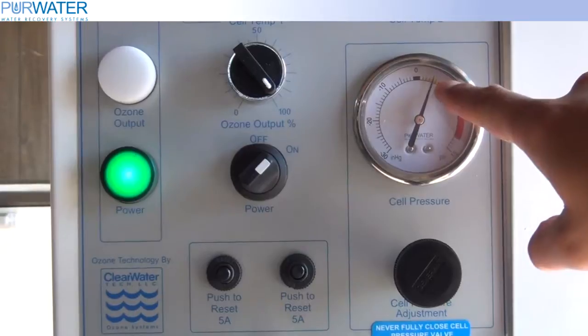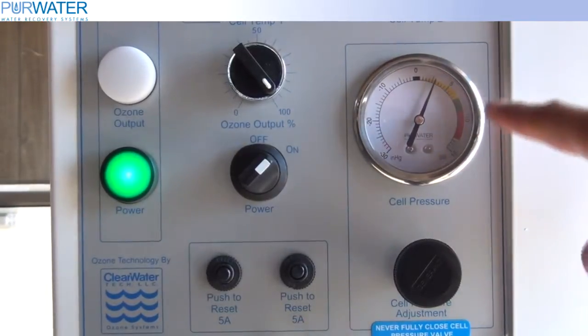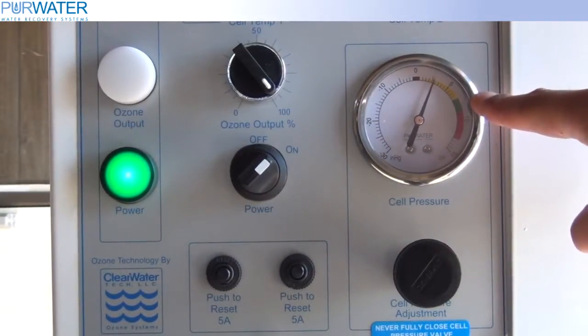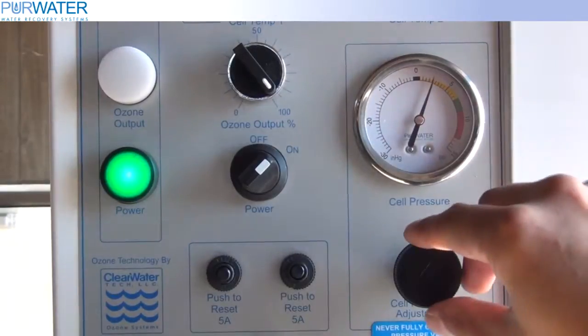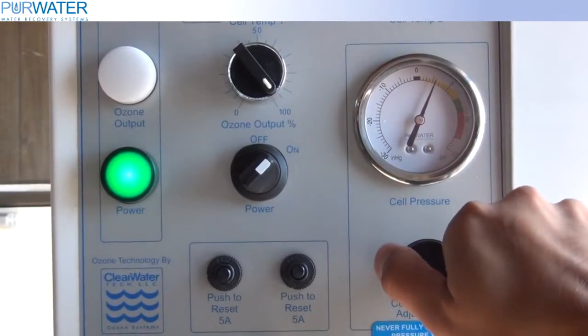To begin, the ozone cell pressure gauge should be set to 8 psi. This can be achieved by closing or opening the cell pressure adjustment valve until you achieve 8 psi.